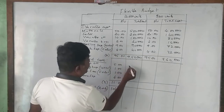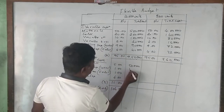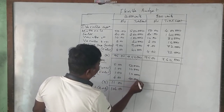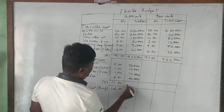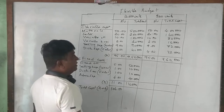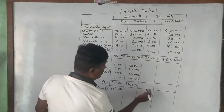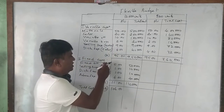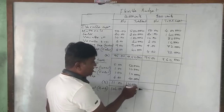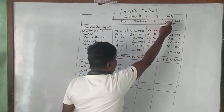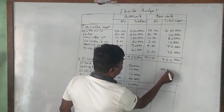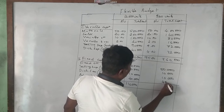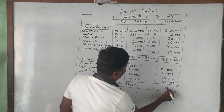Now fixed costs: fixed overhead 5 × 10,000 = 50,000; fixed selling 10,000; fixed distribution 10,000; fixed admin 40,000. Total fixed cost = 1,10,000. Fixed cost will remain the same whether you produce 10,000 units or 8,000 units — it stays at 1,10,000.